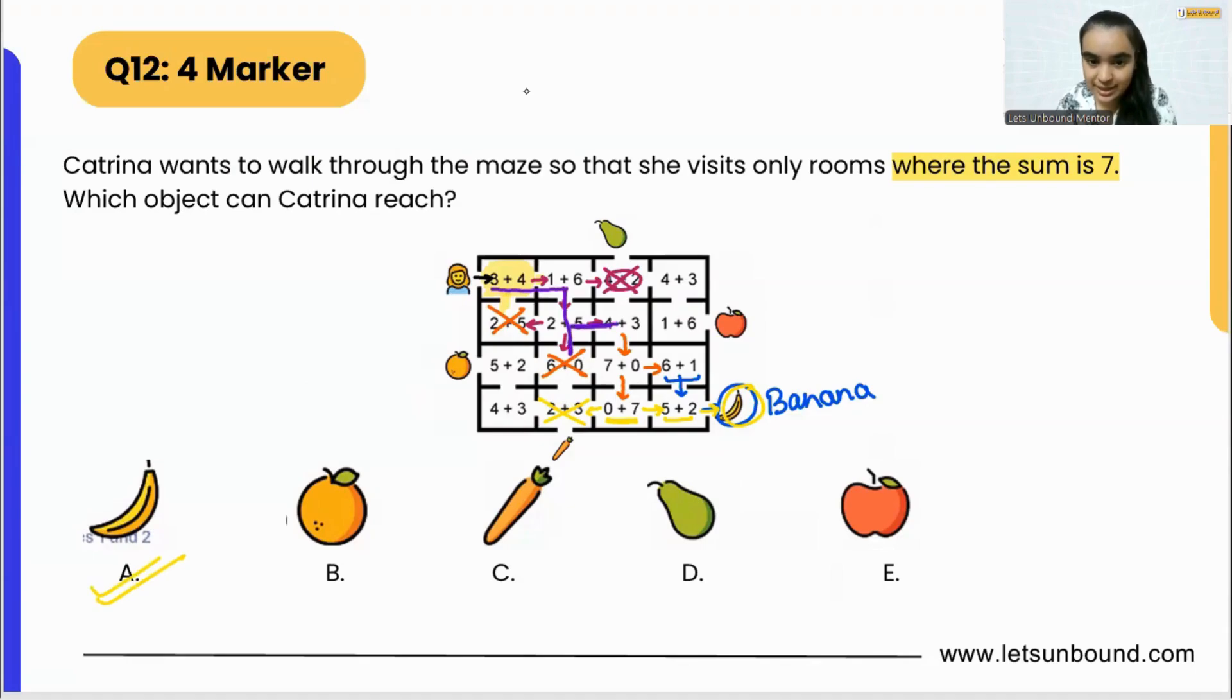So which path Catrina will follow? Here to here, then down, then here, then down, then I came towards the right. And from here she can go down and then she can reach banana, or she can go down from here and then she can also reach banana. Okay, so there can be two different ways from this door, correct?